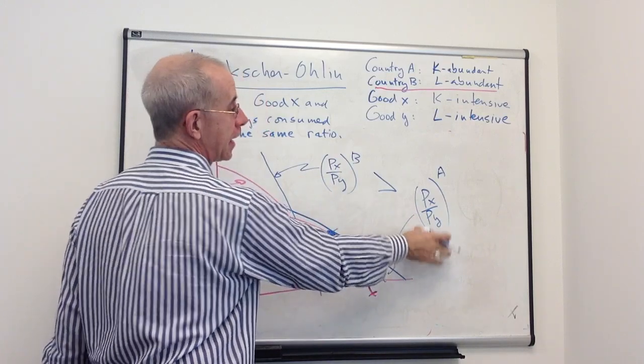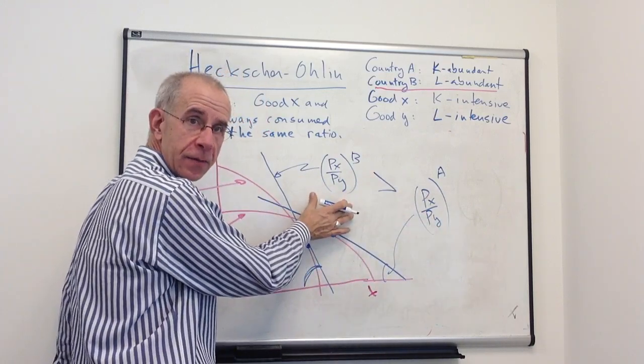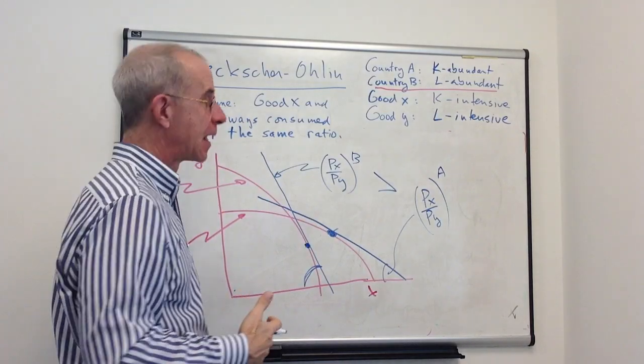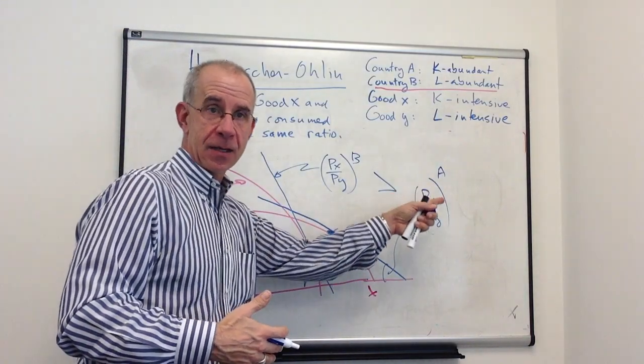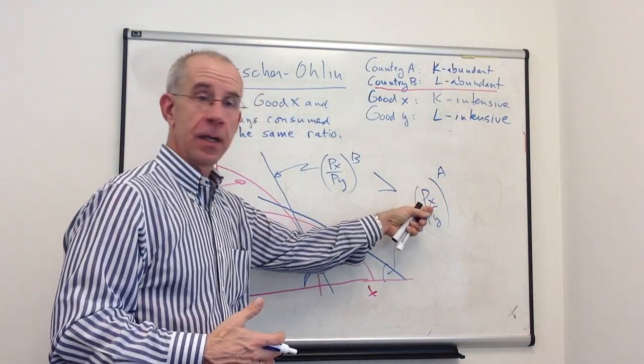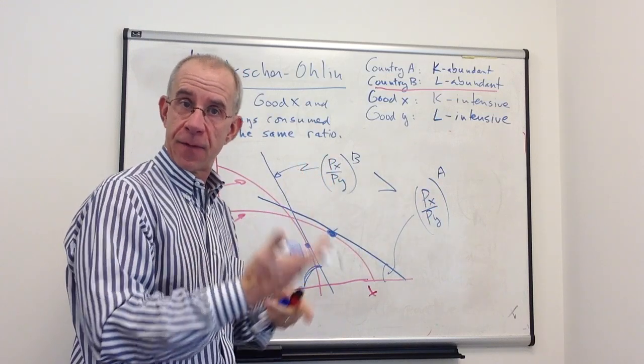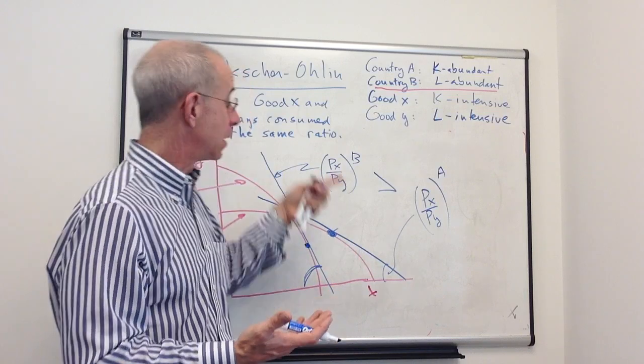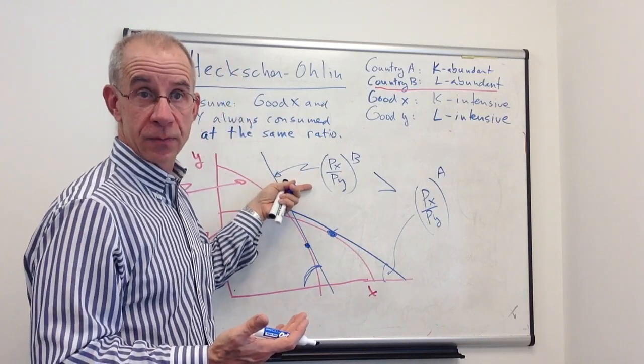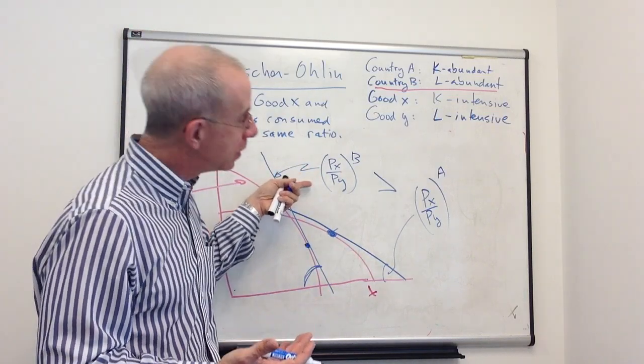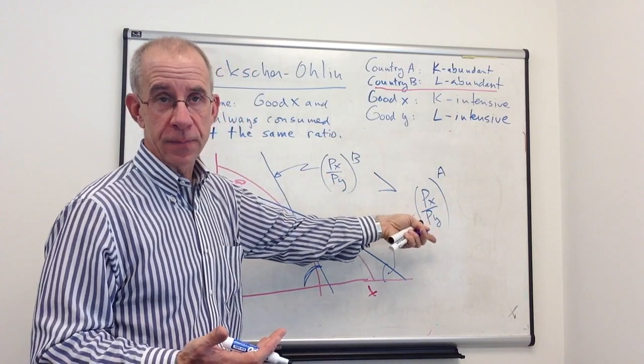Relative price of X in A is less than the relative price of X in country B. A will be able to export good X to country B, vice versa for the labor-intensive good. Country B will have the low relative price of the labor-intensive good, be able to export it to country A.